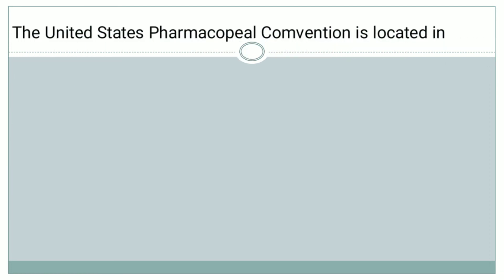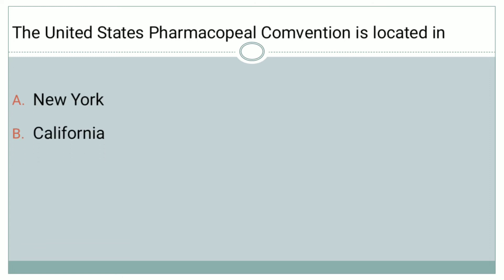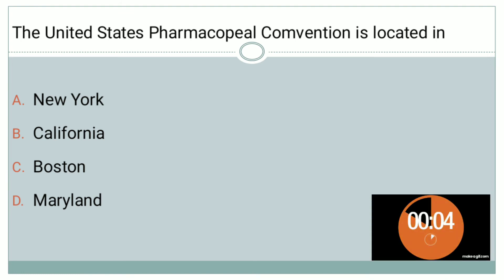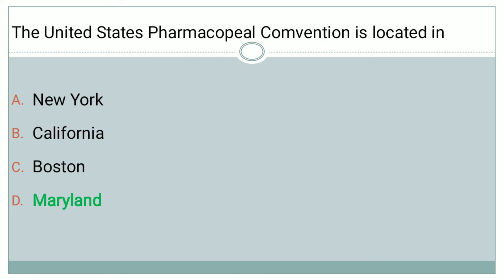The next question: The United States Pharmacopeia Convention is located in — Option A: New York, Option B: California, Option C: Boston, Option D: Maryland. If you are thinking A, B, or C, you are wrong. The right answer is Option D, that is Maryland.